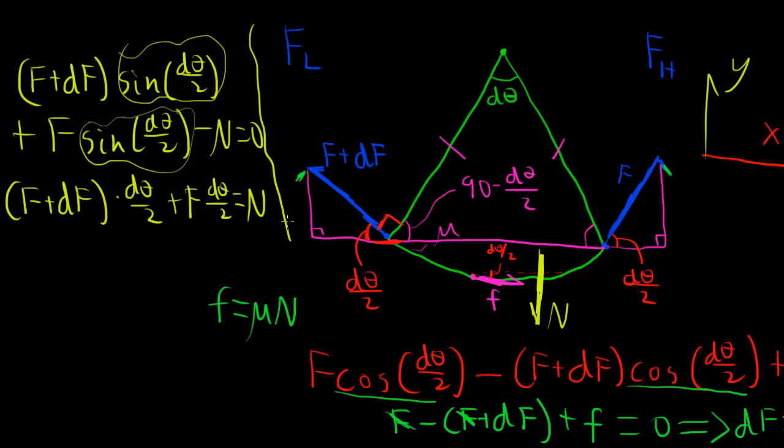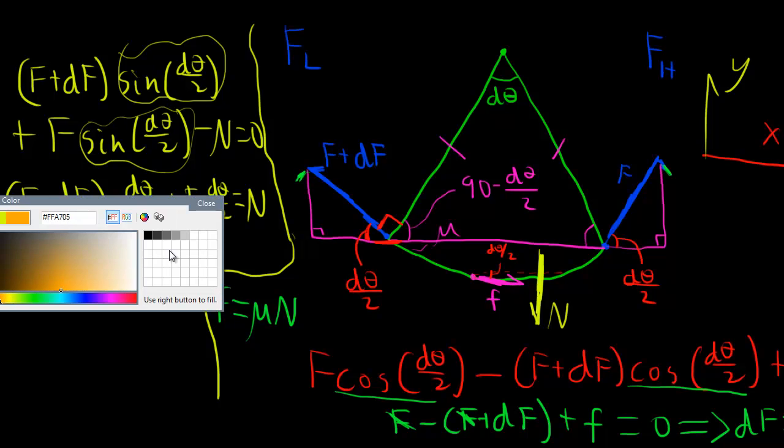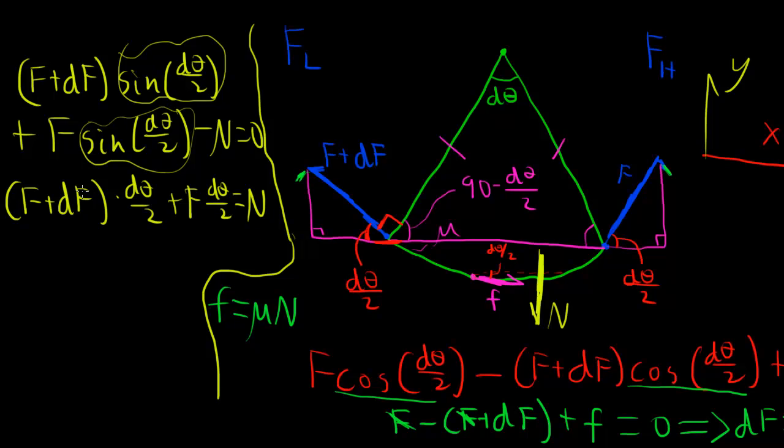We can use the small angle thing we just figured out to replace both of these sines with the angles themselves. So we have f plus df times dθ over 2 plus f dθ over 2 equals n. Here we're going to use another pseudo-approximation because since these dθs and dfs are infinitesimal quantities, we're letting them go to 0 in the limit. When you distribute this dθ, you have f dθ over 2 plus df dθ over 2. That df dθ over 2 contains two differential quantities, so it's the product of two quantities that are both infinitesimally small. We're only considering first-order terms in this analysis. This df dθ over 2 would be a second-order term, so we can ignore it. When you do that, we just have f dθ over 2 plus f dθ over 2, which just gives us f dθ. So f dθ equals n, our normal force.